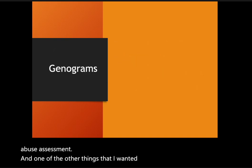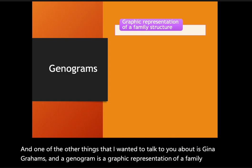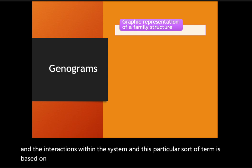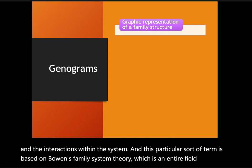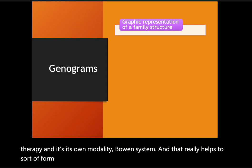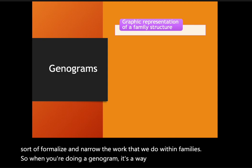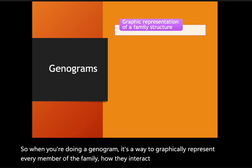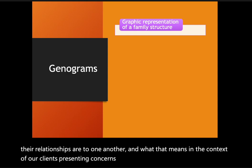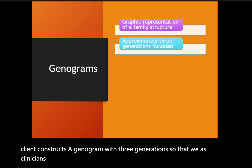Another important tool is the genogram — a graphic representation of a family system and the interactions within it. This term is based on Bowen's family systems theory, which is an entire field of family therapy and its own modality that helps formalize and narrow the work we do within families. When doing a genogram, you graphically represent every member of the family, how they interact with one another, and what their relationships mean in the context of the client's presenting concerns. It's always recommended that a client constructs a genogram with three generations so clinicians can best identify patterns within the family.